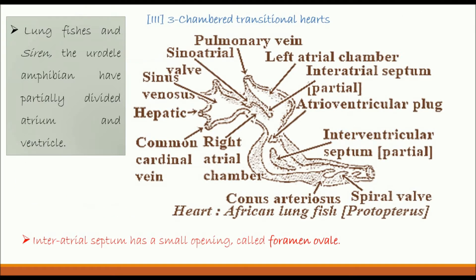Here we are going to discuss three-chambered transitional hearts. Three-chambered transitional hearts are found in amphibians, especially in aneurons. But some amphibians like siren have their ventricles partially divided by interventricular shaft.